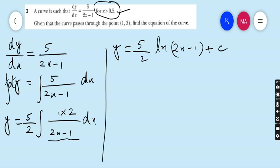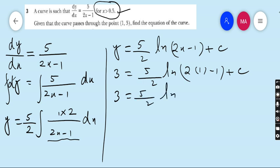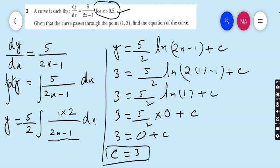Now this curve passes through the point 1, 3, so we have to put 3 is equals to 5 upon 2 ln, 2x is 1 minus 1 plus c. 5 upon 2 into ln 1 you can find from the calculator you will get 0. So 3 is equals to 5 upon 2 into 0 is 0 plus c, and c is equal to 3.